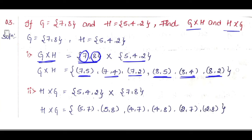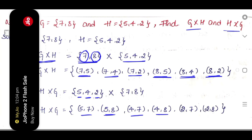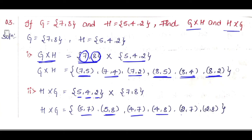Now for H cross G: you take set H = {5, 4, 2} and G = {7, 8}. Take first element 5 and pair with all elements of G: ordered pairs (5, 7) and (5, 8). Then take element 4 and pair with all elements: (4, 7) and (4, 8). Then take element 2 and pair with all elements: (2, 7) and (2, 8). In next class, we will do the next three problems of this exercise. I hope you understood this class.